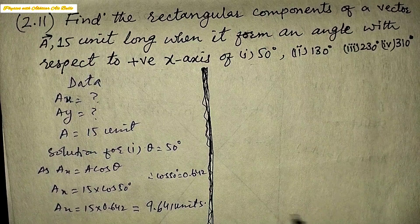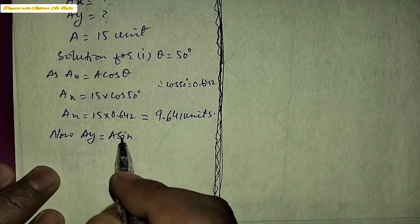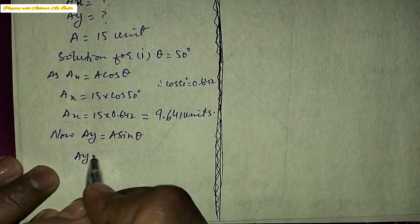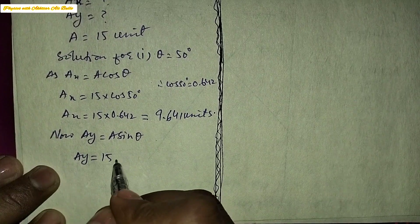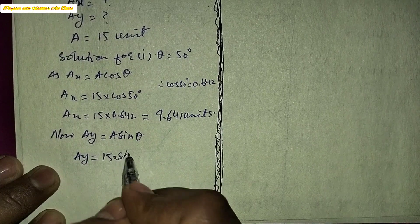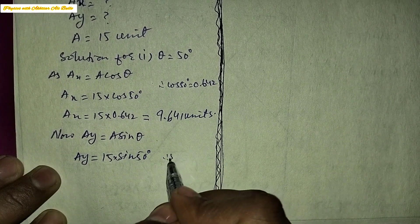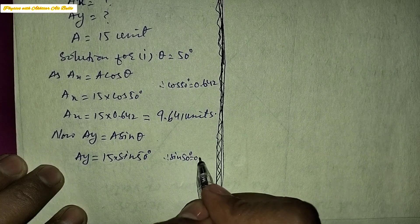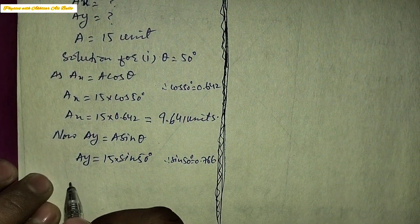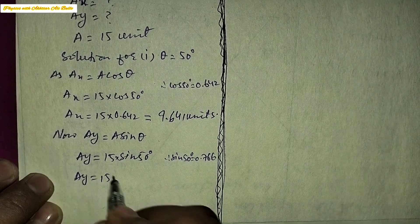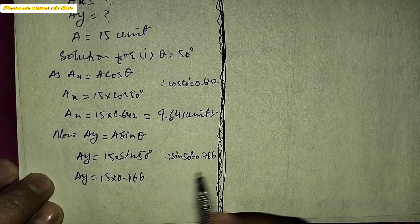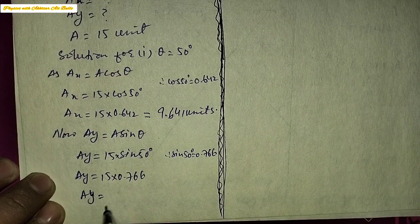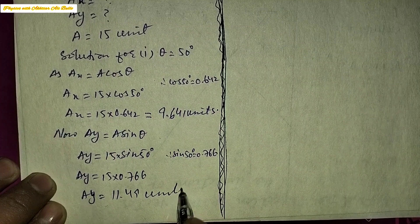For the Y component, Ay is equal to A sin theta, so Ay is equal to 15 into sin 50°. The value of sin 50° is 0.766, so Ay will be equal to 15 into 0.766, giving the Y component as 11.49 units.